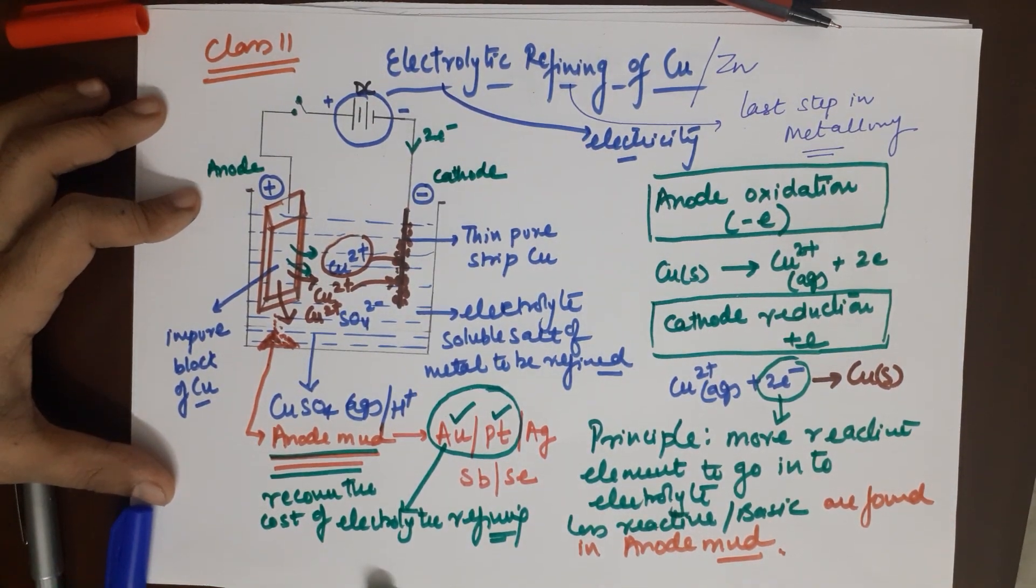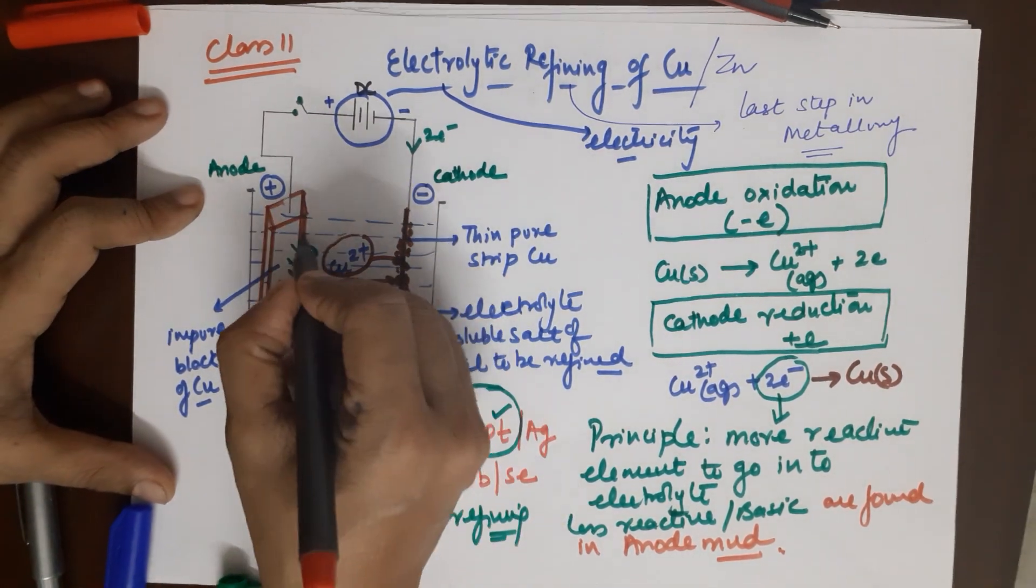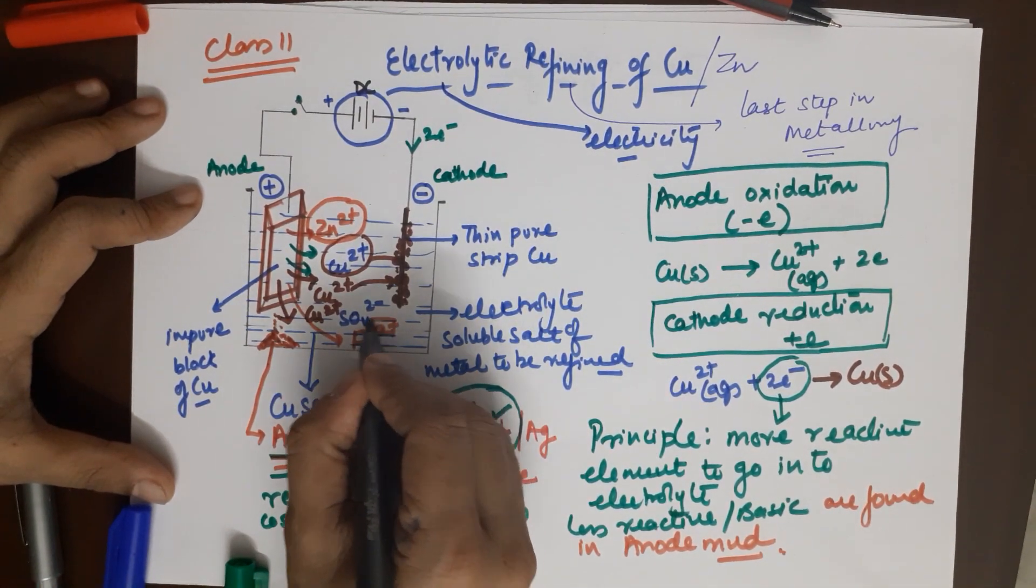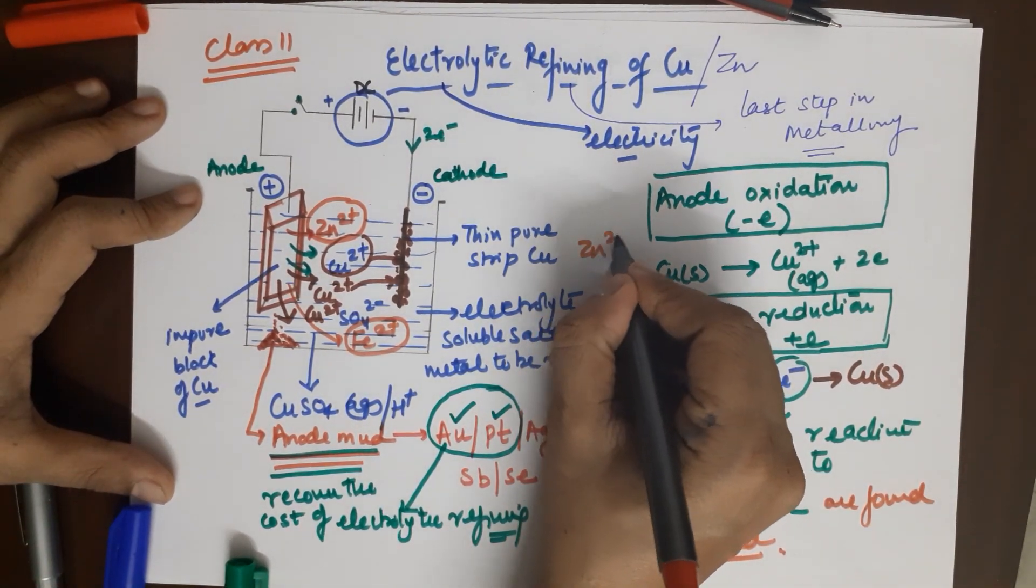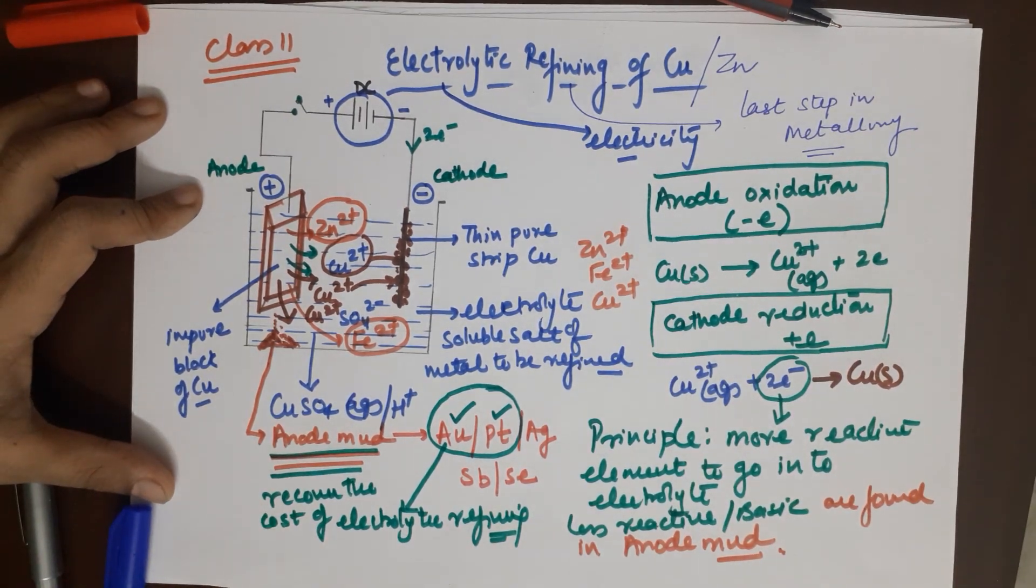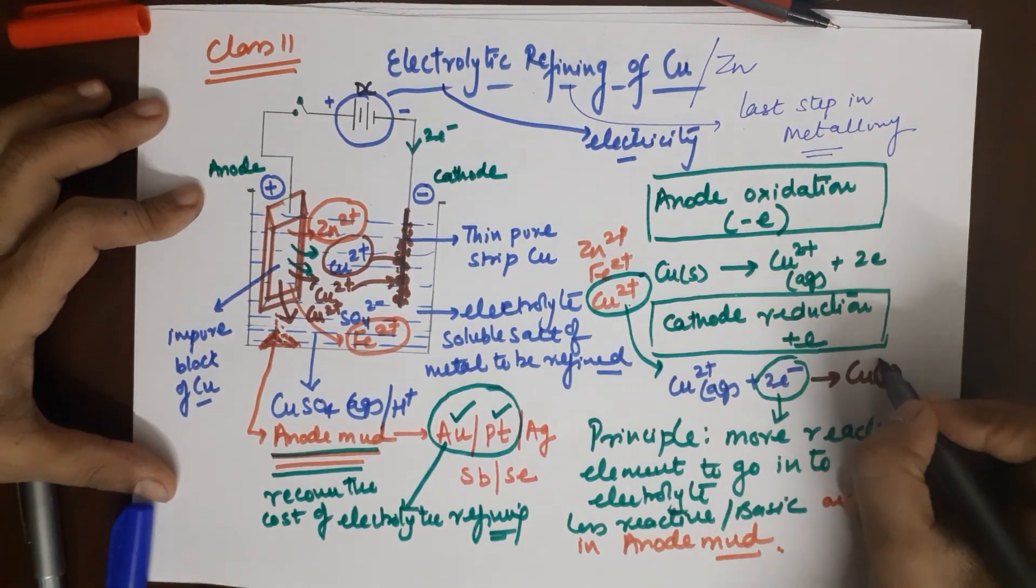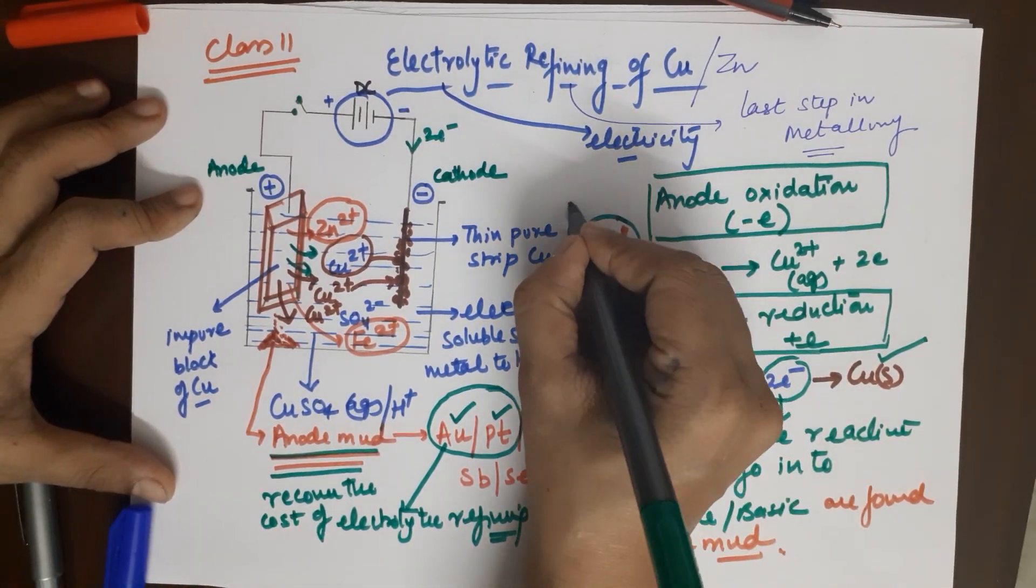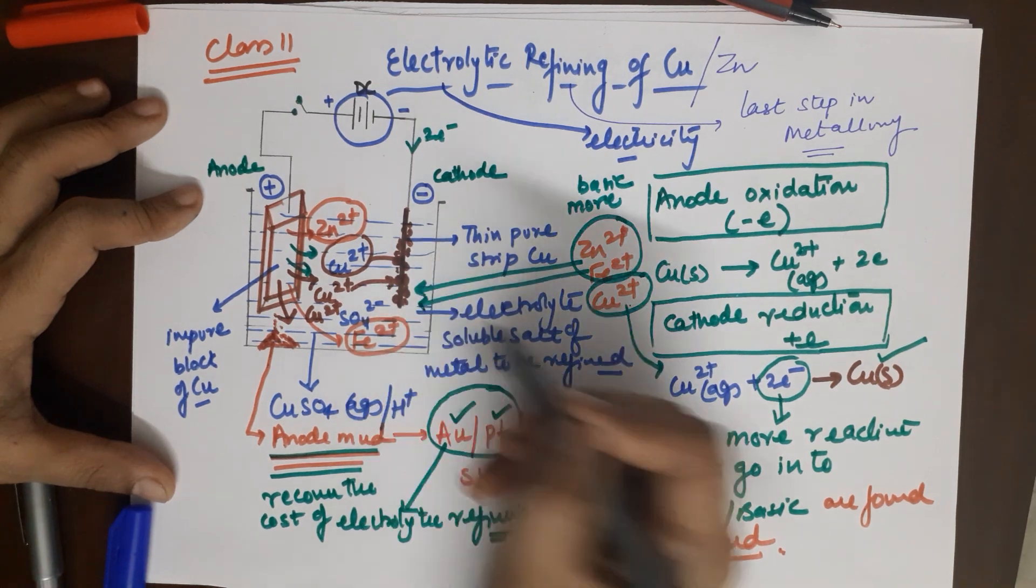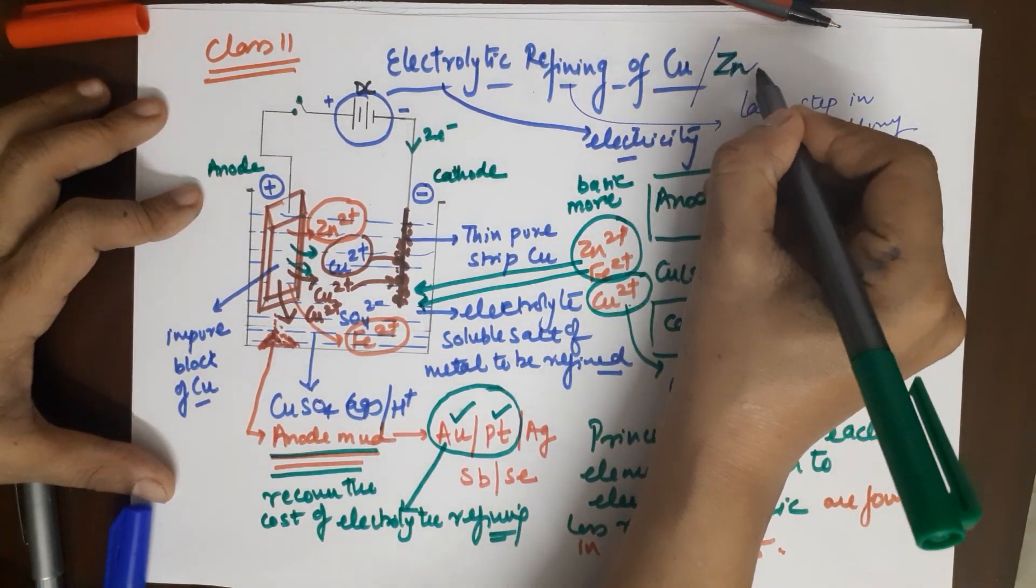If you have more reactive impurities also present, for example if you also have zinc 2 positive ion, or Fe2 positive ion, then what? In case you have zinc 2 positive ion or Fe2 positive ion in comparison to copper 2 positive ion, it is copper which is less basic. This would undergo reduction and you would get your copper, while these are more basic or more reactive, they tend to remain in the electrolytes. They will not be deposited at the cathode.